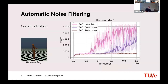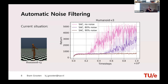The setting we work in with automatic noise filtering looks at environments like Humanoid V3, and we test the well-known algorithm SAC (Soft Actor-Critic). If there's no extra noise in the environment, SAC is able to learn well and get 5,000 reward at the end of a million time steps. But if 80% or 90% of the input features are noise and not relevant to the task, SAC is not able to learn anymore.